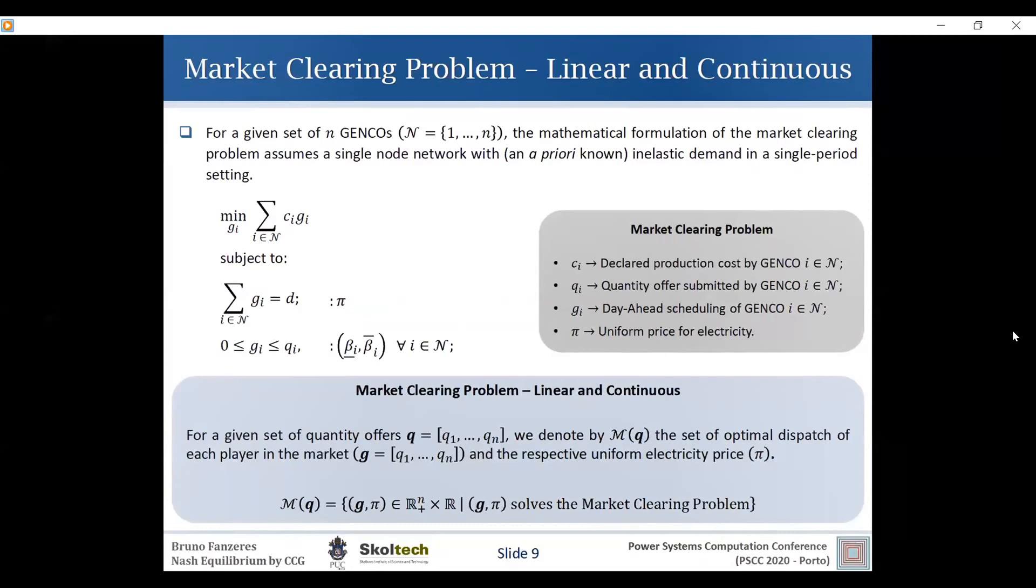So the amount cleared by each competitor is bounded by the quantity offered into the market. So in this problem we are particularly interested in two variables. A primal variable, the amount cleared by each competitor, the dispatch of each generation company, and the electricity price, which resumes to the dual variable. So for presentation purposes, let this set M of Q represent the optimal solution of this market clearing problem for a given vector or for a given set of quantity offers, one for each market participant.